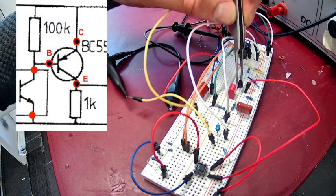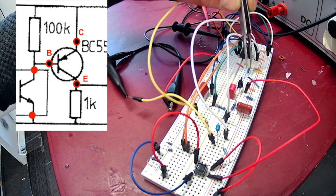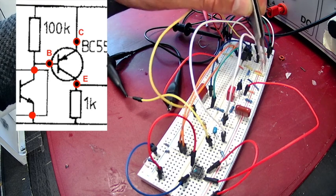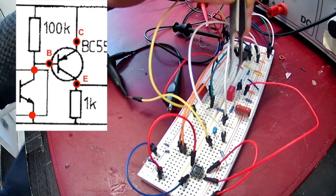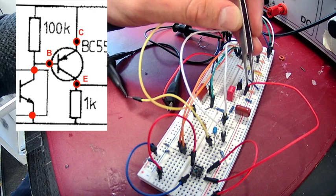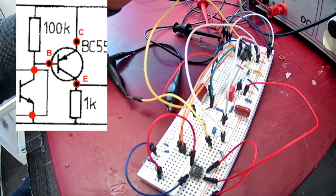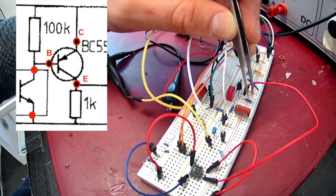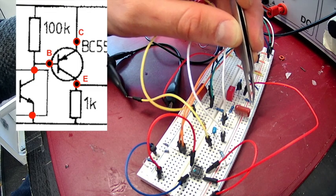And that same leg is connected through a 100 kilo ohm resistor to the 9 volt line. Then on the transistor we have the collector that is connected directly on the 9 volt line and the emitter. And the emitter is connected through a 1 kilo ohm resistor to ground.